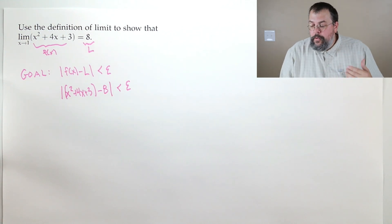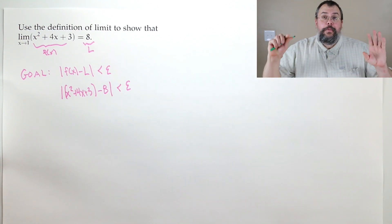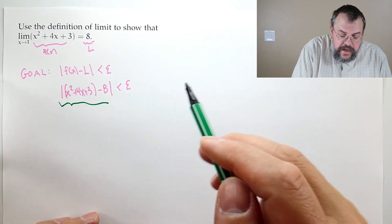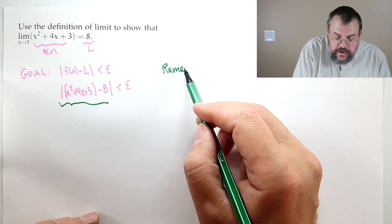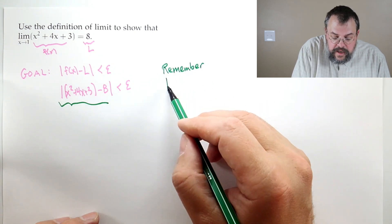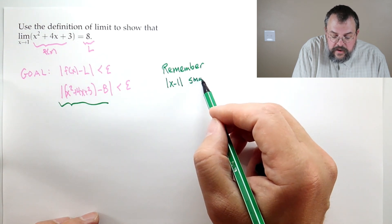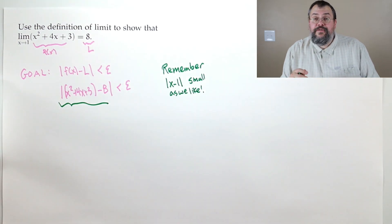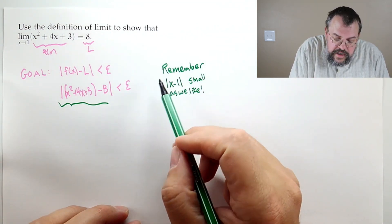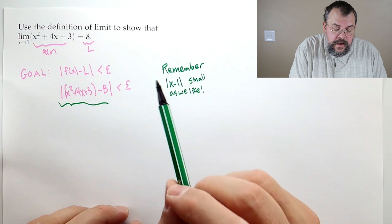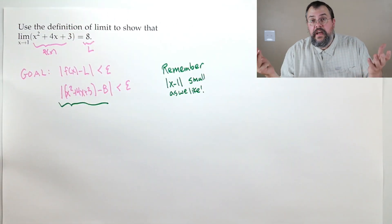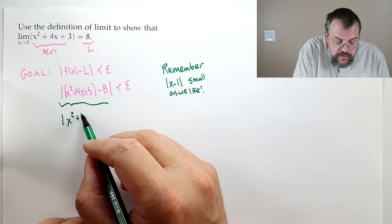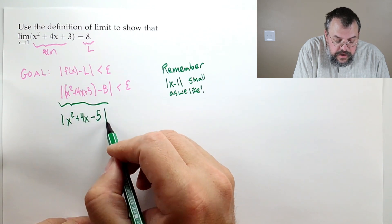So our goal translates into: we want the absolute value of x²+4x+3 minus 8 to be less than epsilon. We're going to have to specify what delta is, but we'll wait and explore first. The key to all these types of problems is that we can make the absolute value of x minus 1 as small as we like — we get a choice. So we seek out an absolute value of x minus 1, because x goes to 1.